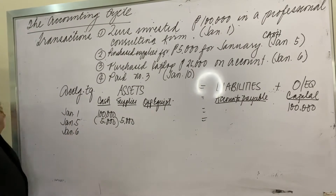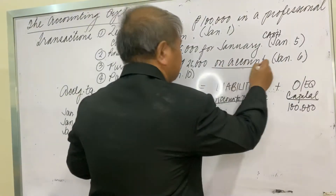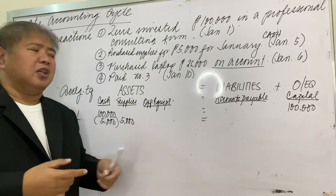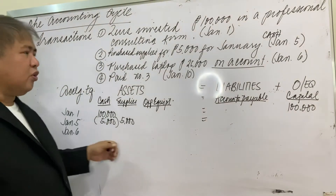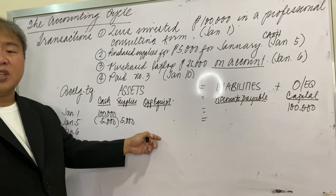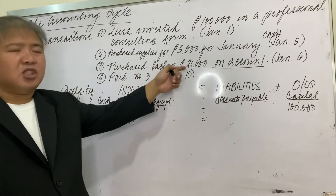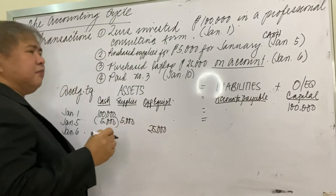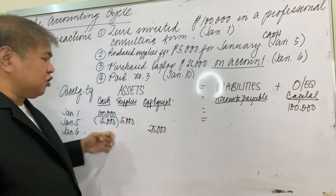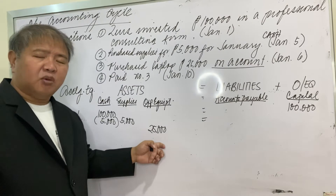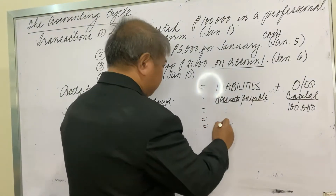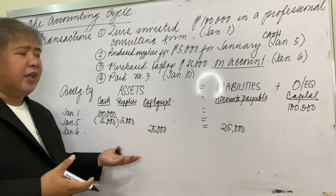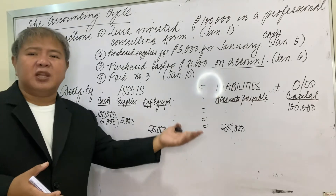On January 6, Zeus purchased a laptop on account, meaning he did not pay for it yet — it is a liability. Office equipment increased by 25,000 pesos. Since it was not paid, there is no effect on cash. Instead, this remains a liability, so accounts payable also increases by 25,000 pesos. The accounting equation remains balanced.